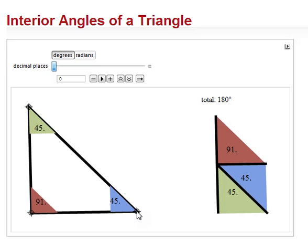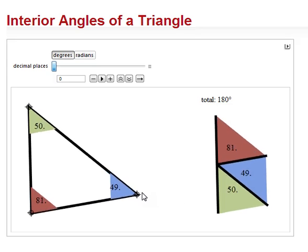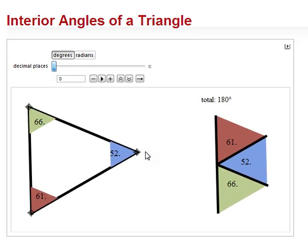If we change the triangle you'll see that this remains true. Here we have 61, 52 and 66. You can add them all up and you'll find out that it still adds up to 180 degrees.